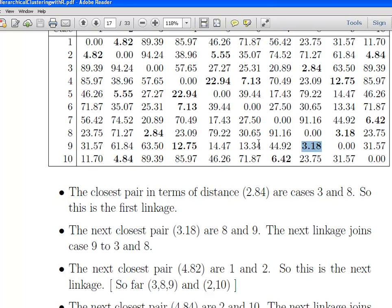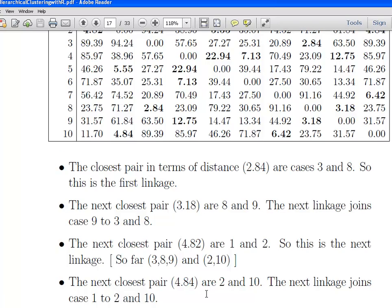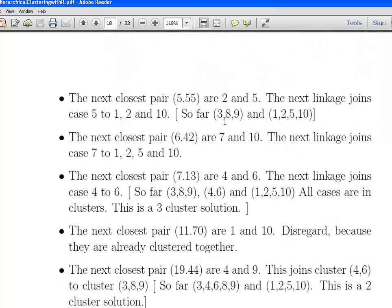The next nearest pair is 1 and 2, at 4.82, so this sets up a new cluster. We have 3, 8 and 9, and 2 and 10. Then it continues on. The closest pair is 1 and 2 at 4.82, and then 2 and 10 at 4.84. Now we have two clusters: 3, 8 and 9, and 1, 2 and 10.